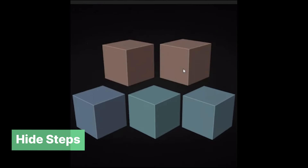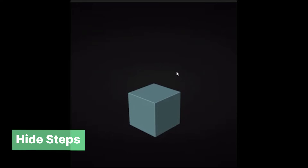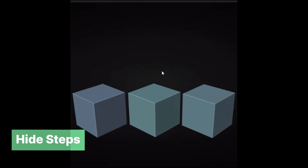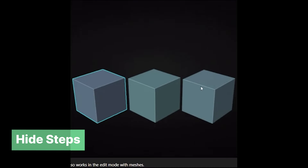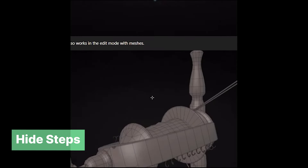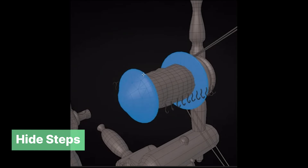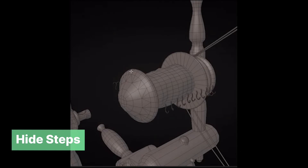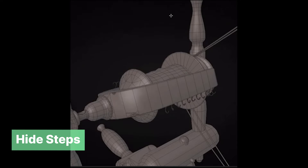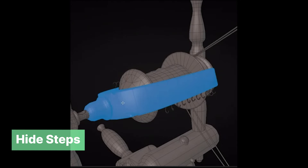Hide steps. Creating scenes like these can be complicated. This hide steps add-on will give you the option to hide and unhide objects at will. This is already functionality we have in Blender, but what this add-on adds to it is the use of hide steps. Instead of just hiding and unhiding everything at once, you can hide different objects and reveal them one by one.